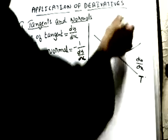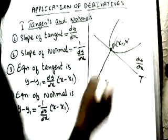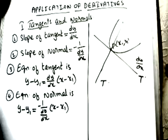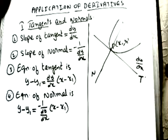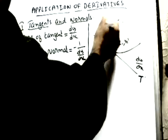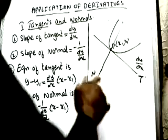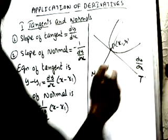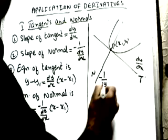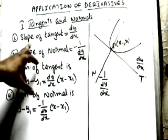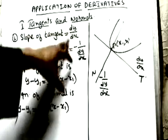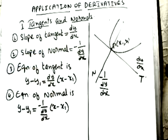If we draw a perpendicular to the tangent, it is called the normal. Since normal is perpendicular to the tangent, its slope will be −1/(dy/dx). So the slope of the tangent is dy/dx and the slope of the normal is −1/(dy/dx).